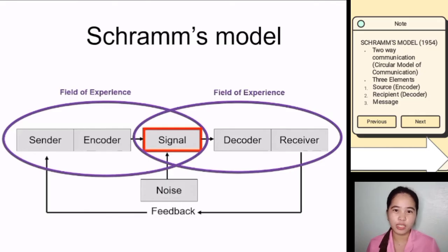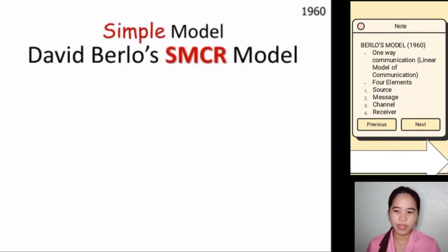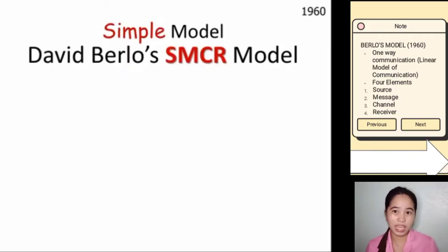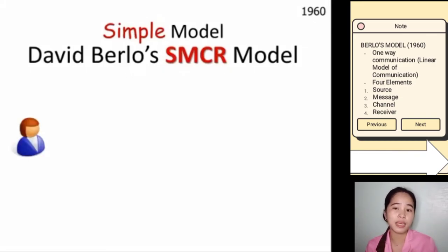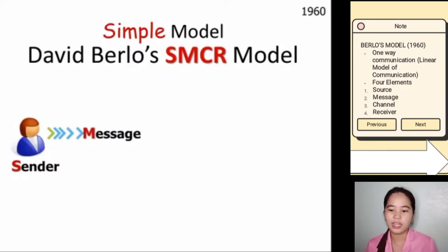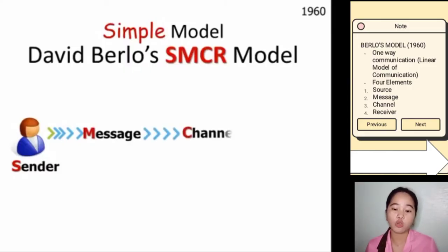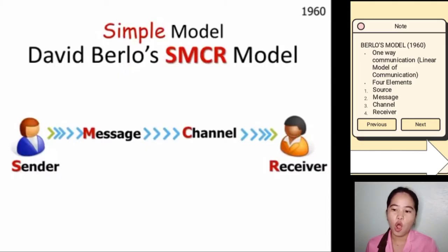Now let's proceed to Berlo's model of communication. If you're just starting to study communication, the simplest model to understand is David Berlo's SMCR model, which came about in 1960. This starts with acknowledging that a message comes from somewhere — it comes from a sender, that's the source. The message is what is being communicated, and that message has to go through a channel before it can get to the receiver or the audience.